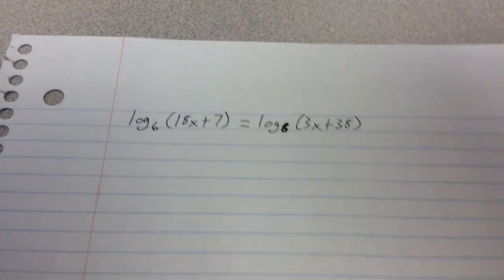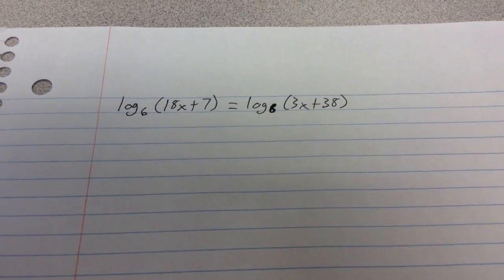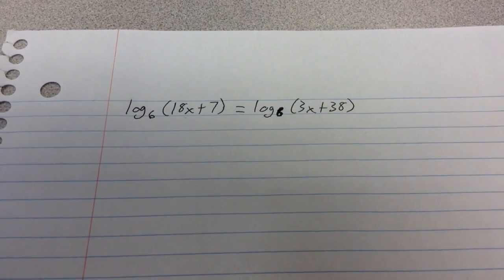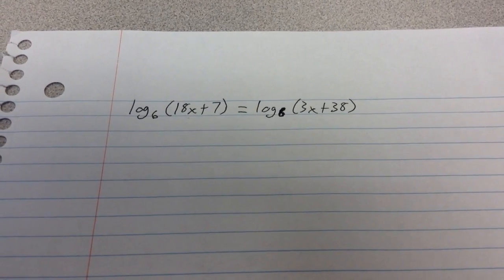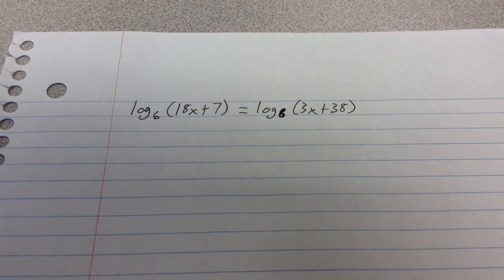So, sorry about the 6 on the right hand side over here, kind of ugly looking, but it's a log base 6 on both sides. If you have a log base 6 on both sides, basically you approach this exactly like we do the exponential equations that have the same base on both sides.